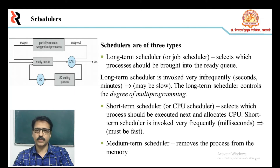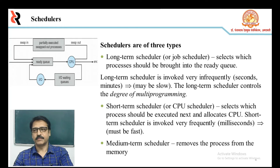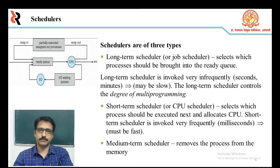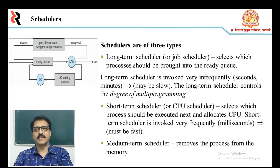The job scheduler selects processes from the queue and loads them into memory for execution by the CPU scheduler. The primary objective of the long-term scheduler is to provide a balanced mix of jobs such as IO-bound and processor-bound. It also controls the degree of multiprogramming — if the degree of multiprogramming is stable, the average rate of process creation must equal the average departure rate. On some systems the long-term scheduler may be absent; time-sharing operating systems have no long-term scheduler. It is invoked when a process changes state from new to ready.